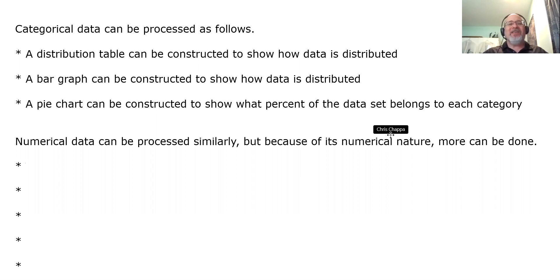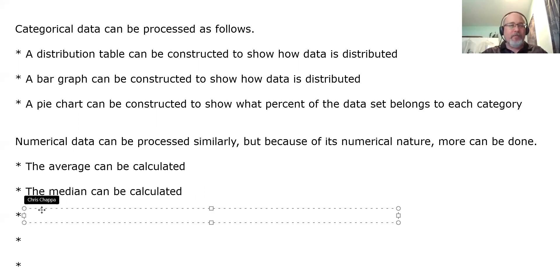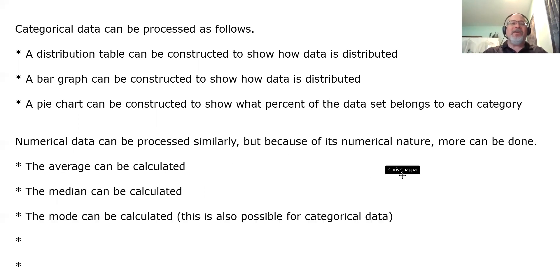Now, numerical data can be processed similarly as categorical data, but because of its numerical nature, more can be done. For example, the average can be calculated. Most of you know how to find the average of a bunch of numbers. We'll be getting into those details in section three of this chapter. The median can be calculated, the number in the middle if you line them all up. The mode can be calculated. You may remember that the mode is the value that occurs the most frequently. Now, this is also possible for categorical data. It would just simply say what's the most popular answer.